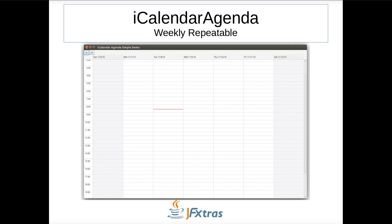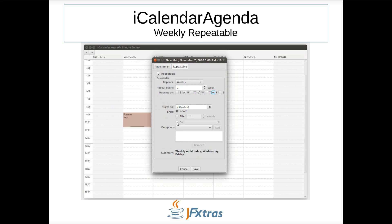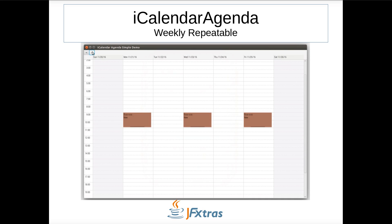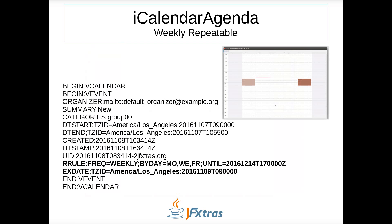This video shows creating a more complicated weekly event. Both Wednesday and Friday are added to the selected days of the week. The end criteria is changed from never to December 14. The exception combo box is used to add November 9 as an exception. After saving, notice that November 9 doesn't have a recurrence. The resulting iCalendar content text shows the RRule property with weekly frequency. The by-day element contains Wednesday and Friday, the until element indicates when the series stops, and the EX date shows the skipped recurrence.